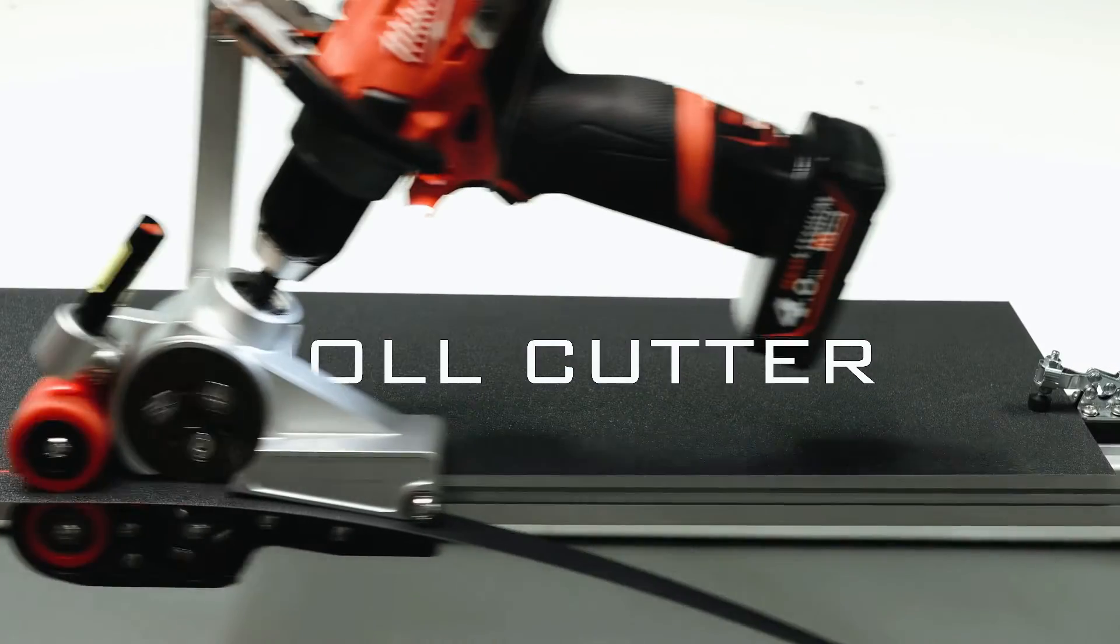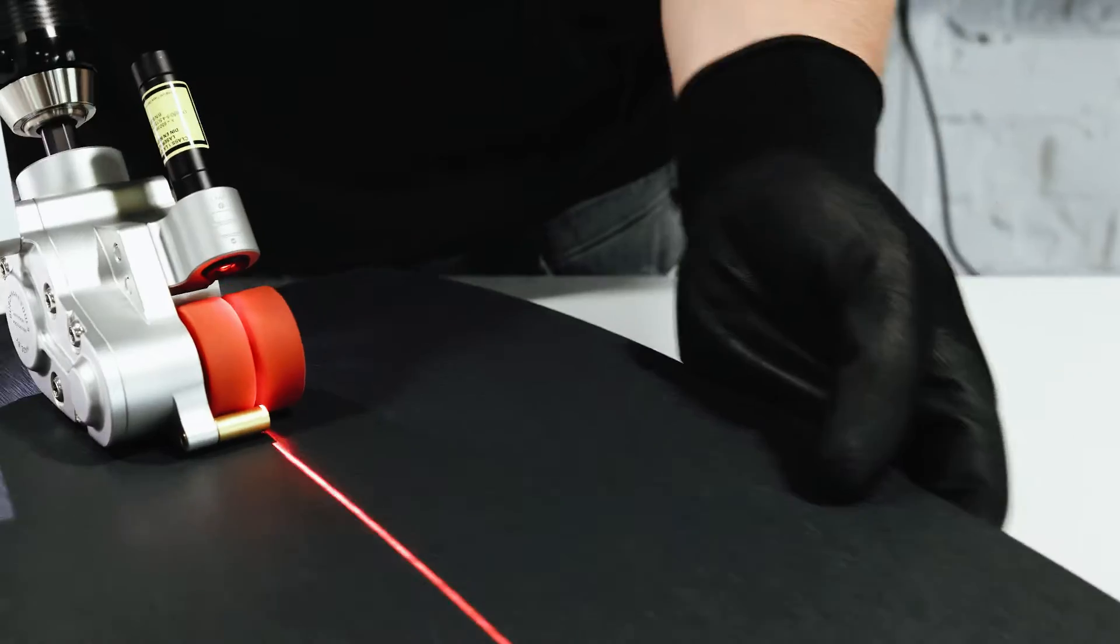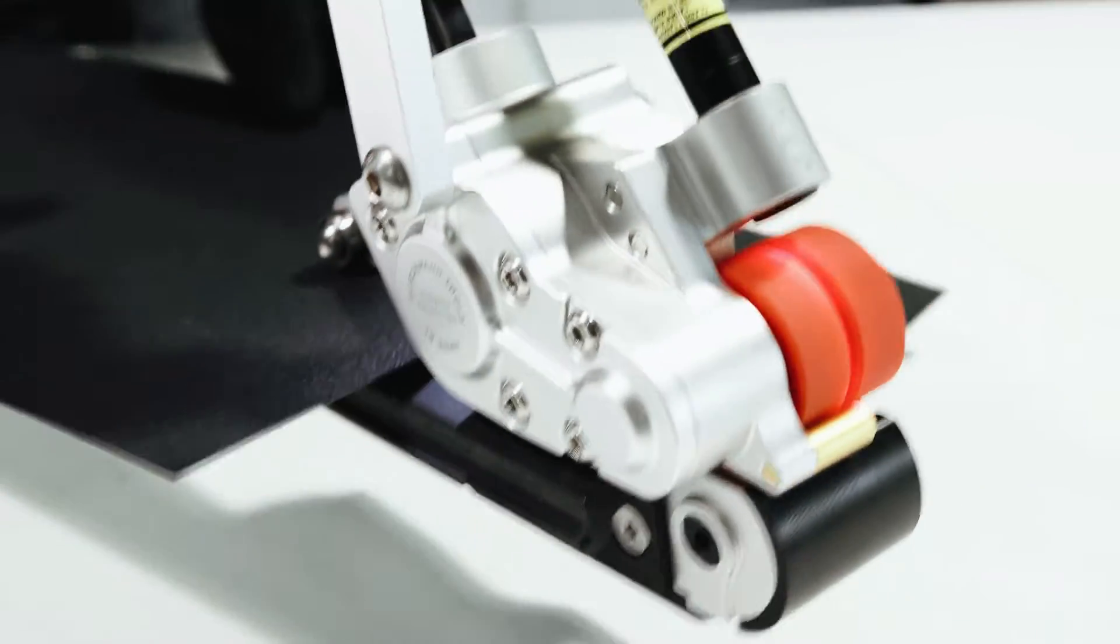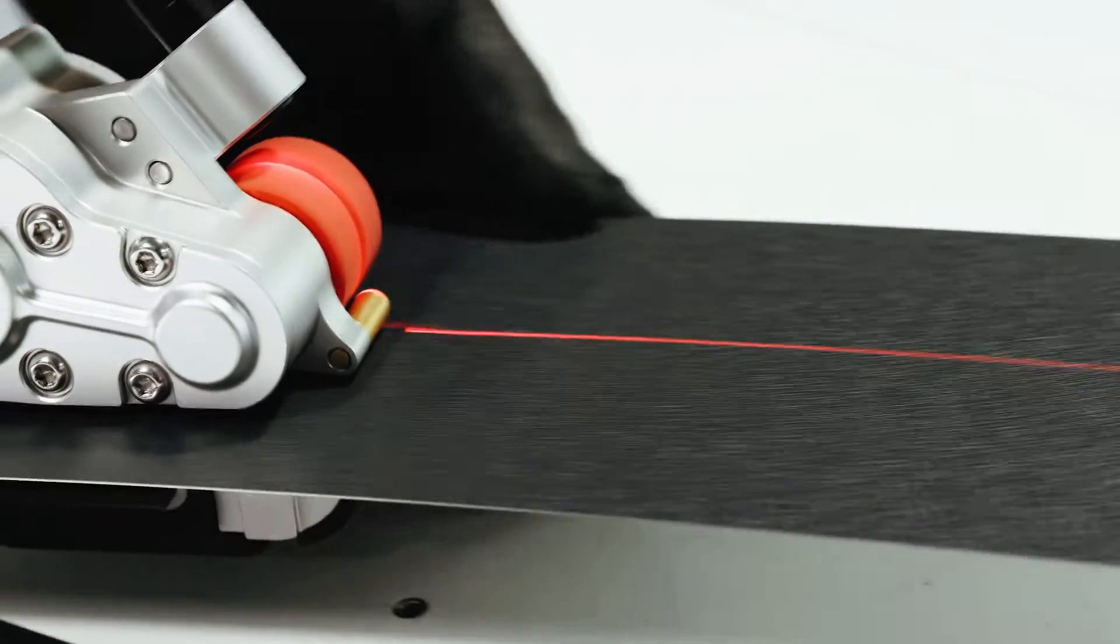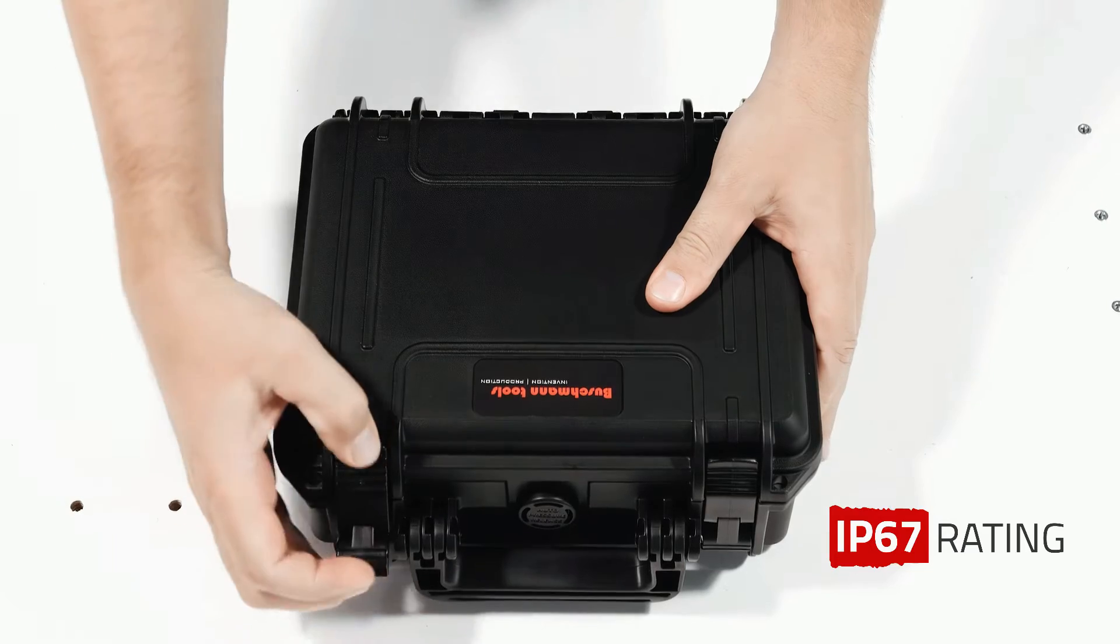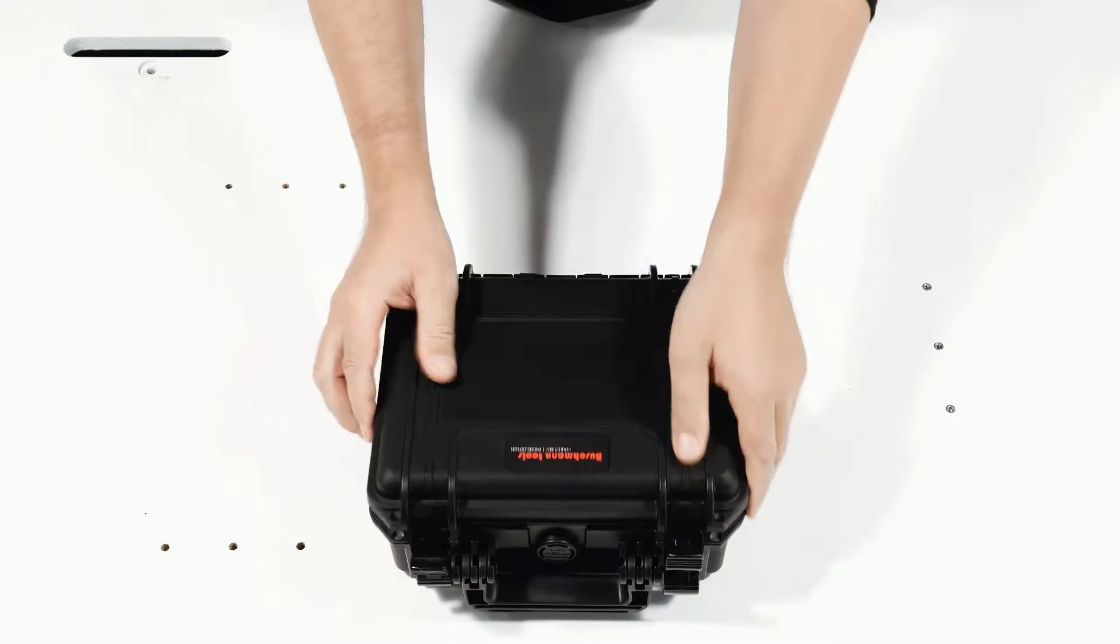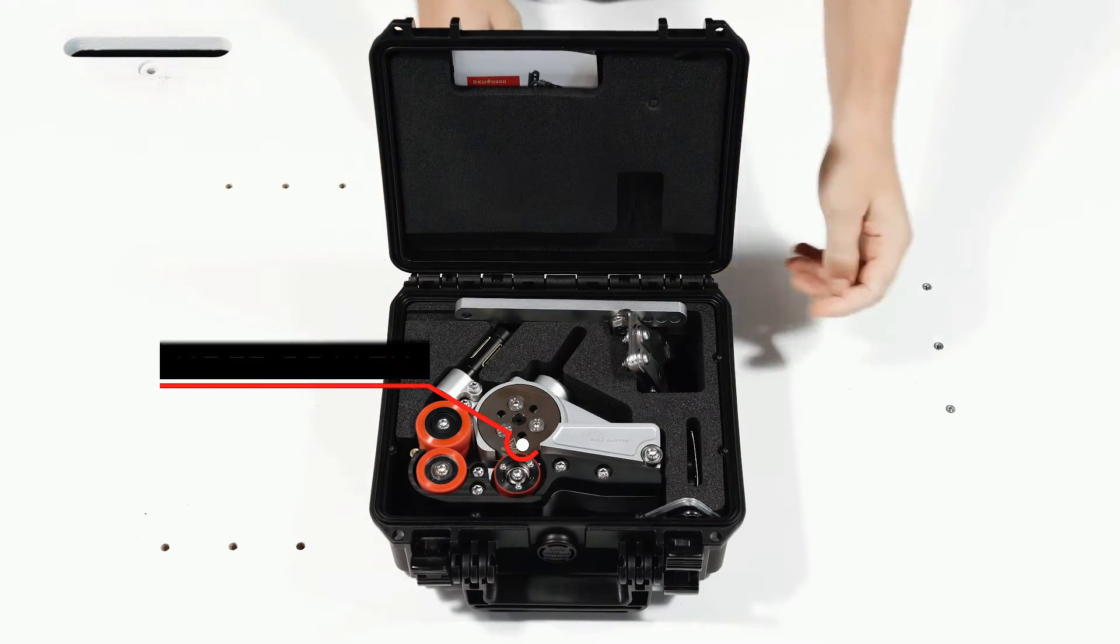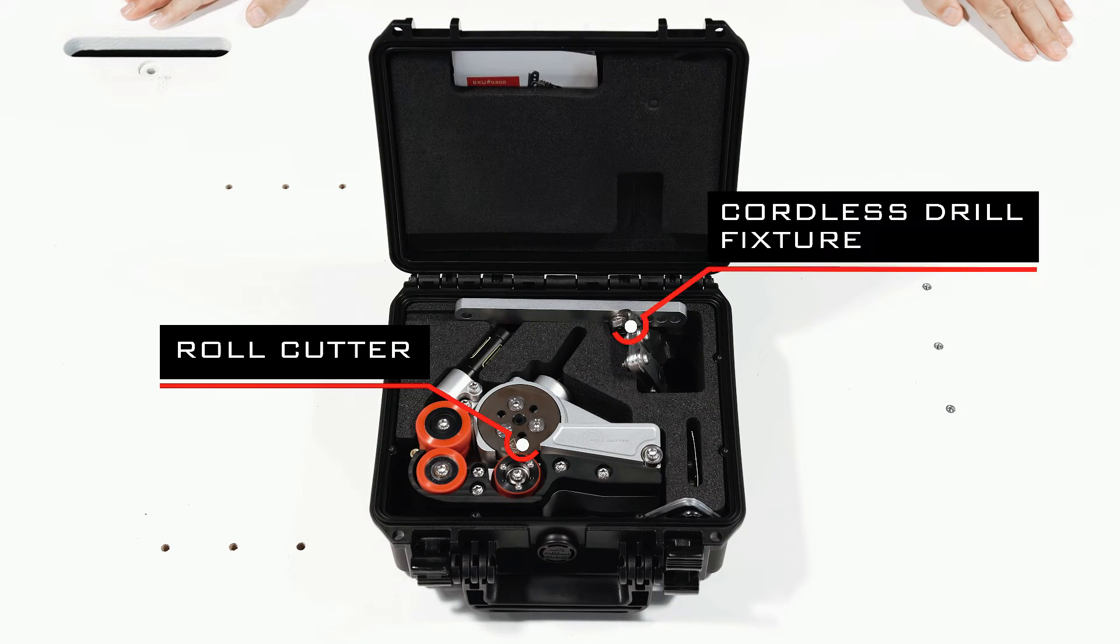Roll Cutter is a tool to cut metal sheets from copper, zinc, aluminum, and steel. Roll Cutter comes in a protected military-grade case with safety foam. In the case, you will find the roll cutter, cordless drill fixture, 5mm allen key, and instruction manual.